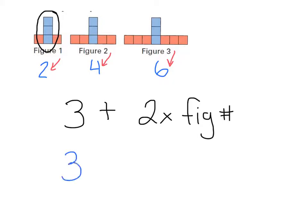Now looking at this is a little confusing, so what we do is we use a variable to hold a place instead. We're going to have a constant three blocks at all times. We're always going to add them because we're always looking for a total number, but instead of writing fig number or figure number, we're going to put two multiplied by let's say the letter n for number. So it's three plus two n.